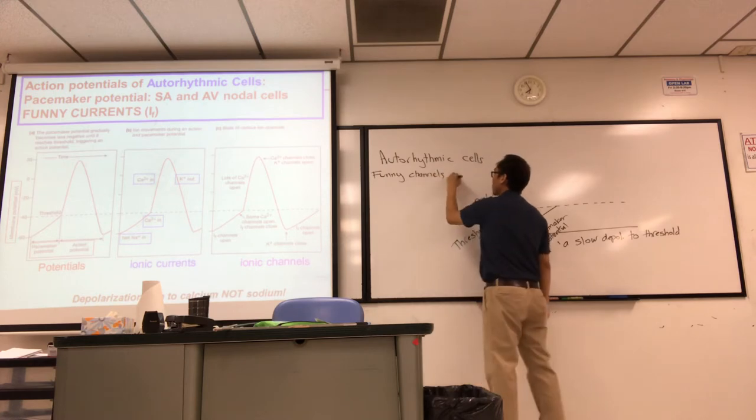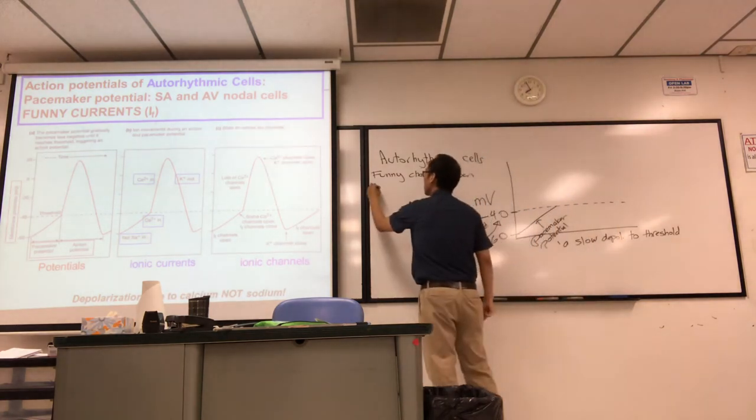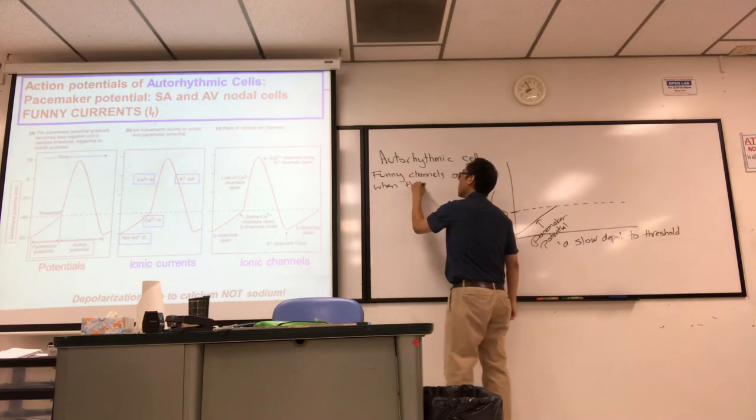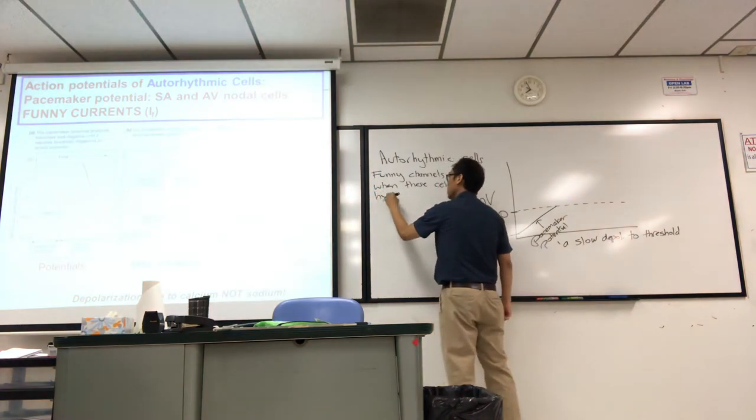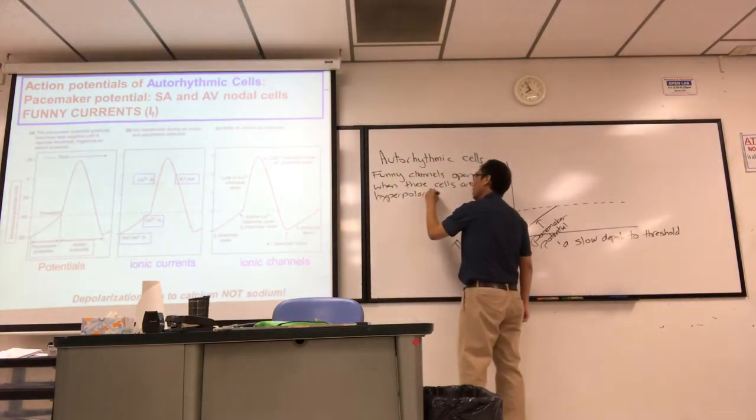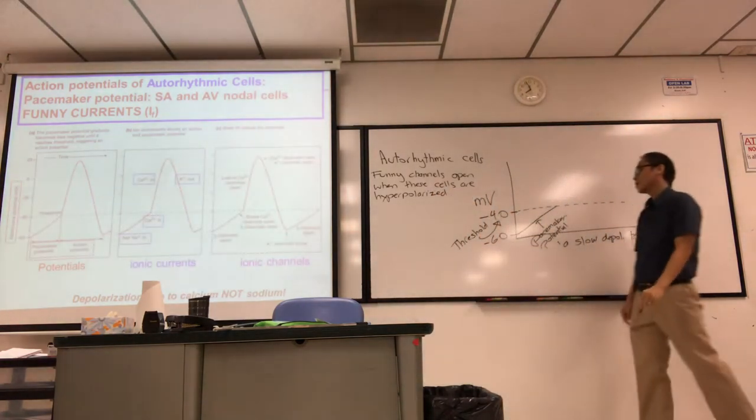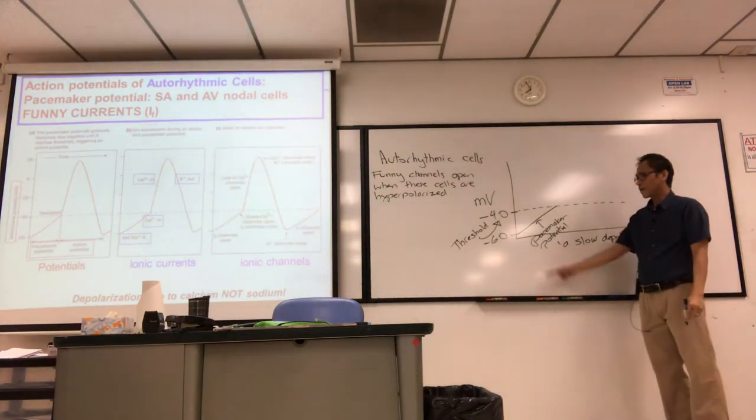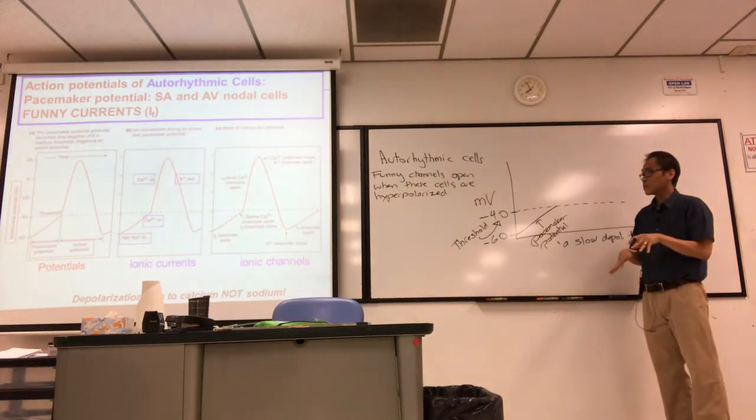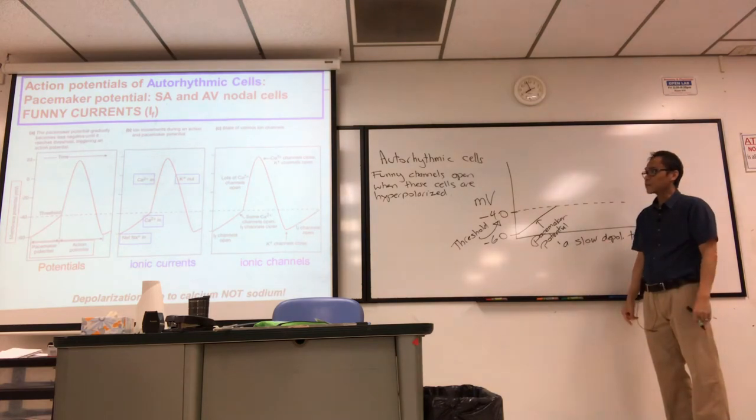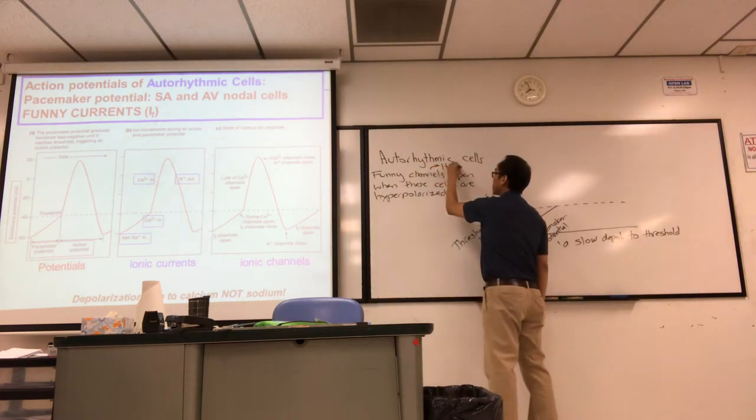Funny channels open when these autorhythmic cells are hyperpolarized. When these cells are hyperpolarized. So if cell potential gets really negative, like negative 60, that's hyperpolarized. These channels open. That's why they don't have a resting membrane potential.